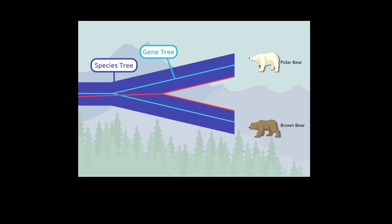Trees for slowly changing genes might suggest a more recent time of divergence. Other genes change quickly and accumulate many variations — this might be true of genes that influence traits that are different between lineages, like fur color or hunting behavior. Trees for these genes might suggest a more distant time of divergence. For most genes, rates of change are somewhere in the middle.